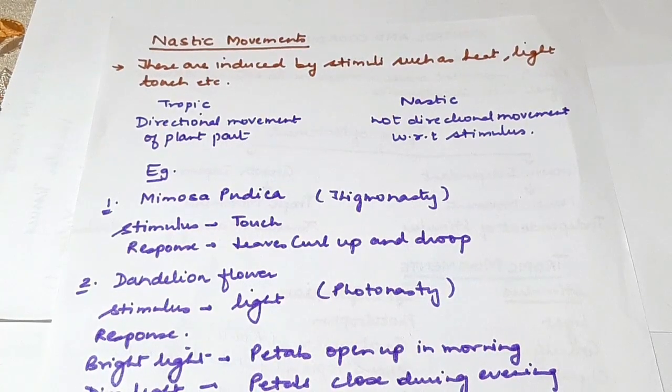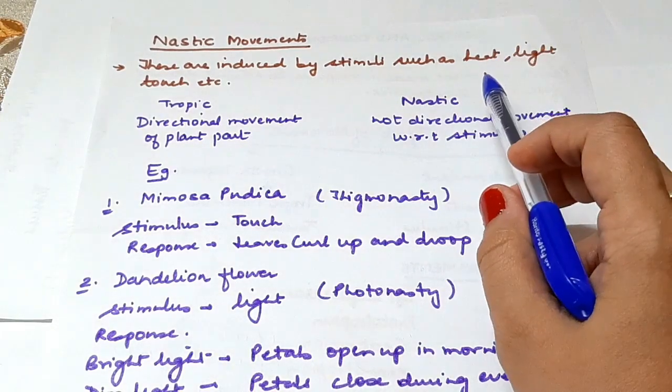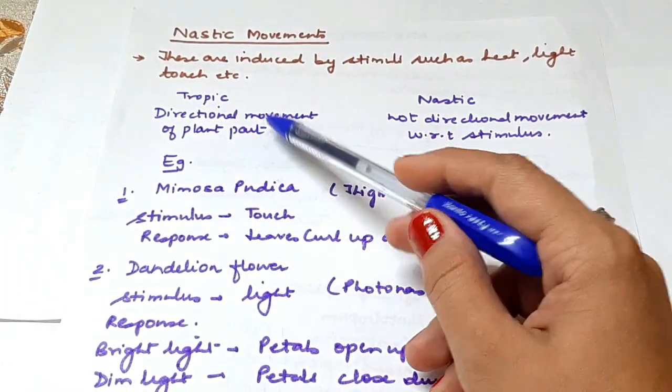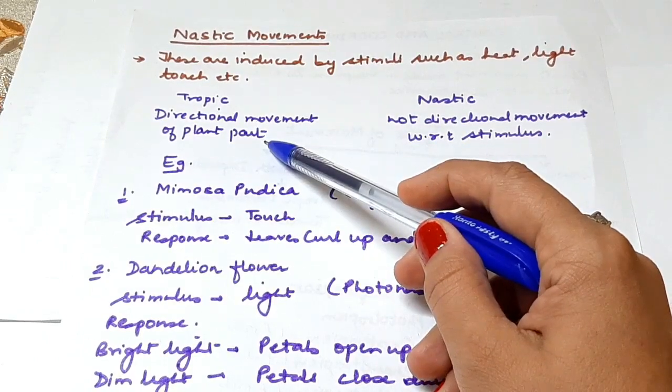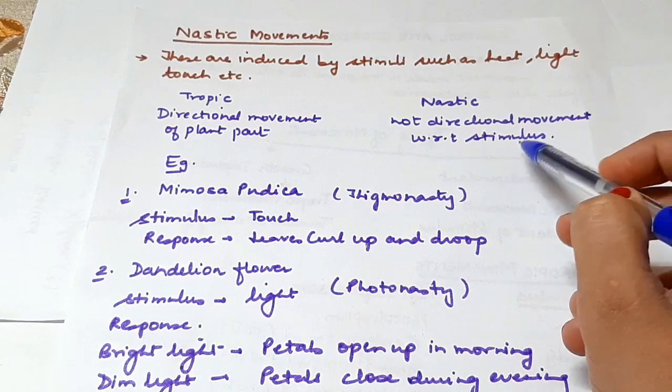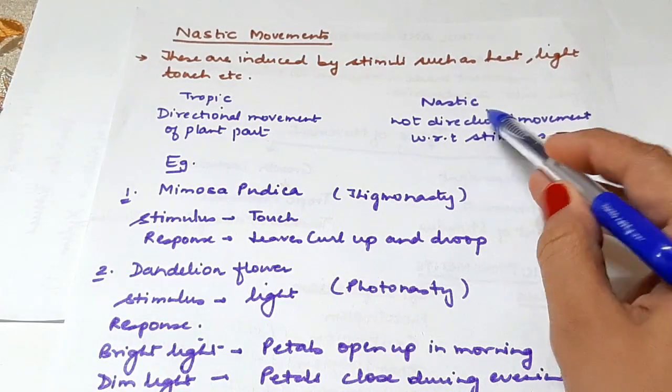Moving on to nastic movements. Nastic movements are induced by stimuli such as heat, light, and touch. Trophic movements are directional movements of plant parts, whereas nastic movements are non-directional with respect to the stimulus.